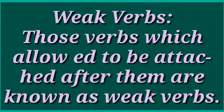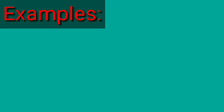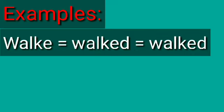On the contrary, there are certain verbs known as weak verbs. All those verbs which allow 'ed' to be attached after them in order to change their second and third form — their past and past participle — are known as weak verbs. Examples include: walk, walked, walked.